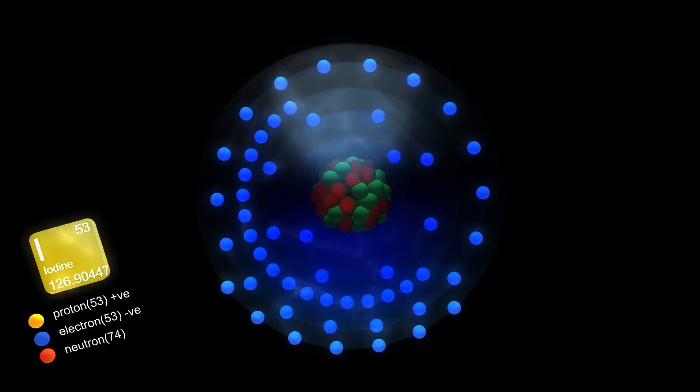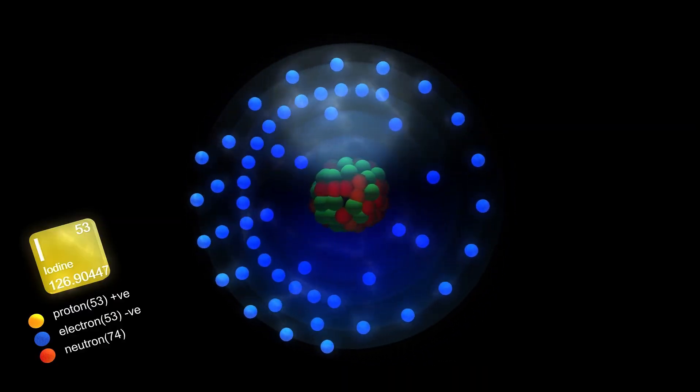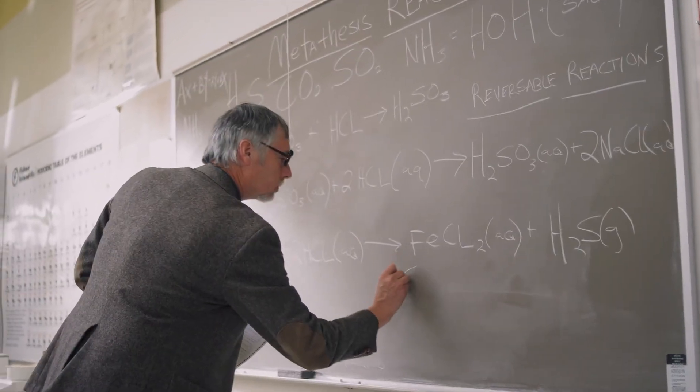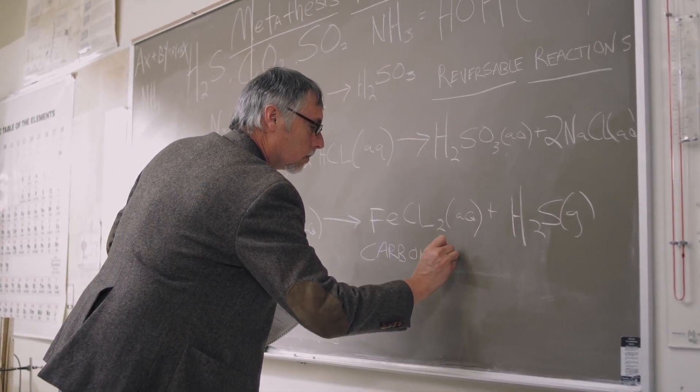These fermions interact through three types of fields: electromagnetism involving photons, the strong nuclear force involving gluons, and the weak nuclear force involving W and Z bosons. According to Cambridge theoretical physicist David Tong, without these force fields, matter particles would drift aimlessly in the universe without interactions or interesting behaviors.